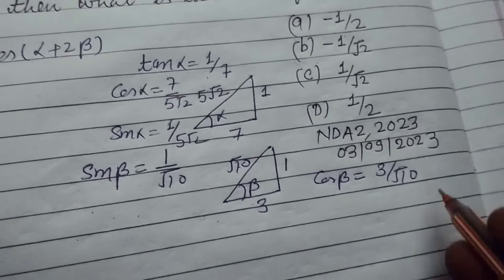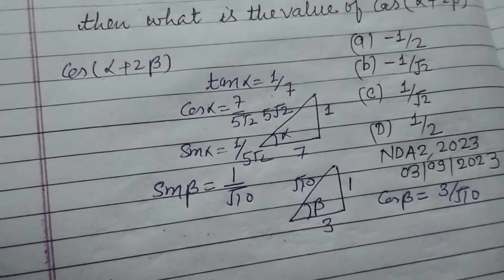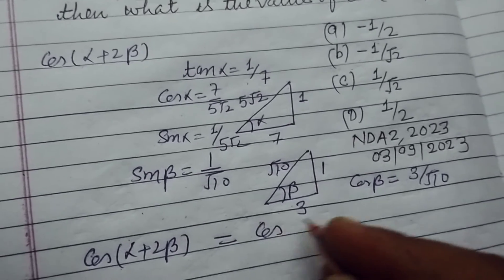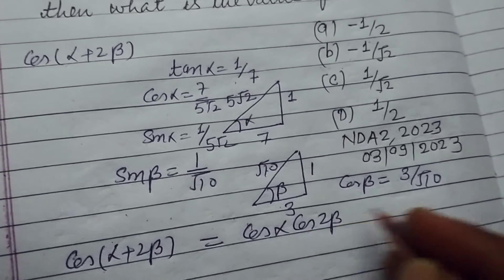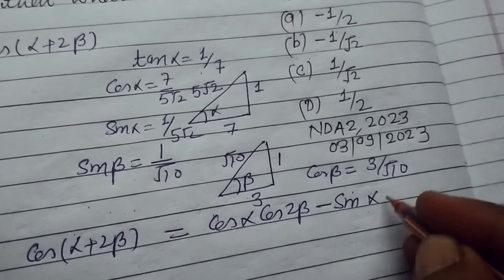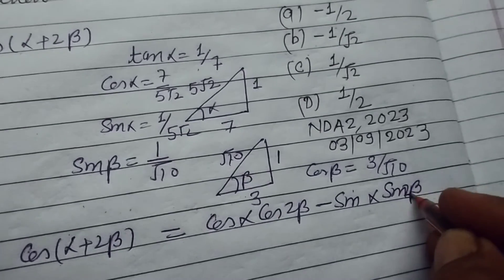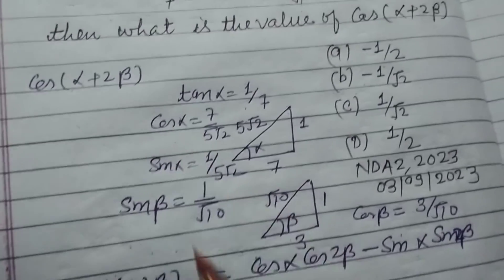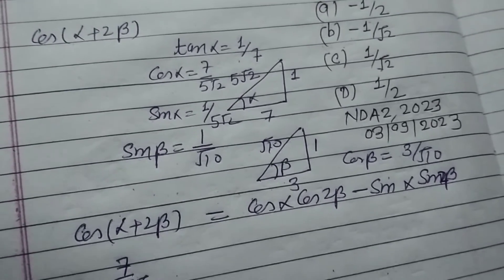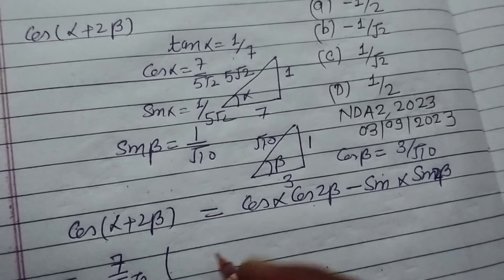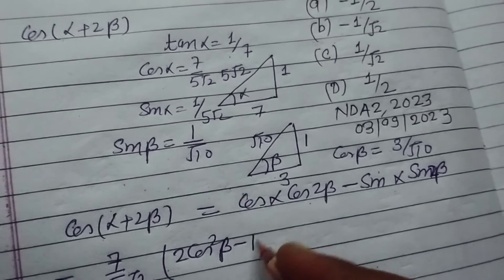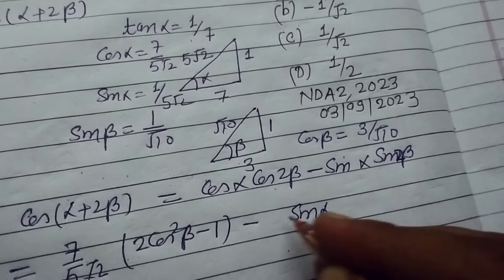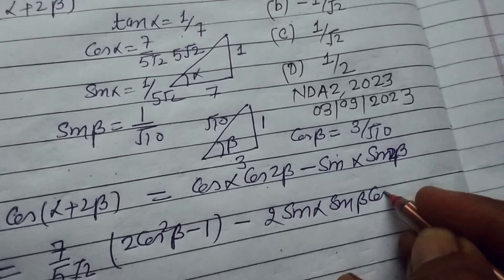So cos β equals 3 upon √10 and sin β is 1 upon √10. Now, cos(α + 2β) expands as cos α cos 2β minus sin α sin 2β, where sin 2β can be written as 2 sin β cos β.